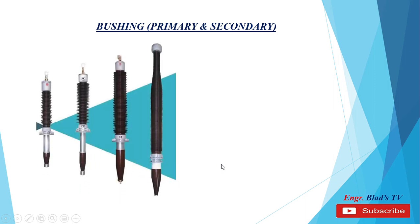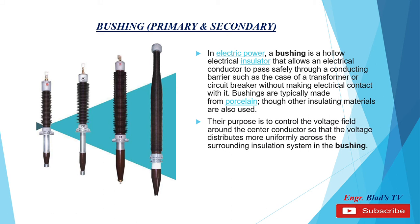Bushing — primary and secondary. In electrical power, a bushing is a hollow electrical insulator that allows an electrical conductor to pass safely through a conducting barrier, such as in a transformer or circuit breaker, without making electrical contact with it. Bushings are typically made from porcelain, though other insulating materials are also used. Their purpose is to control the voltage field around the center conductors so that the voltage distributes more uniformly across the surrounding insulation system in the bushing. In this picture we can see the different types of bushings, which are determined by the different types of system voltage.